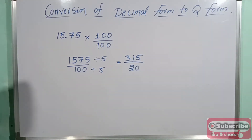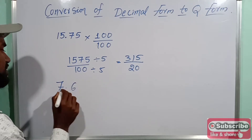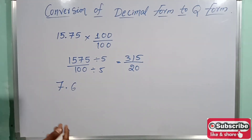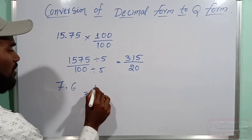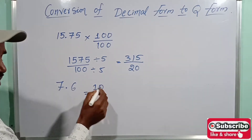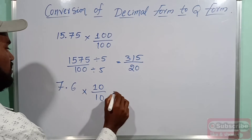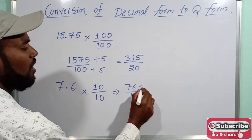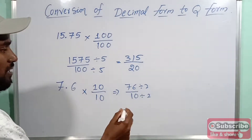Now let's take one more example: 7.6. So how can we change this into rational form? For the point we write one, and there is one decimal place, so I am writing one zero — that is, multiply by 10 over 10. We will get 76 by 10. If you want to simplify, do division here.